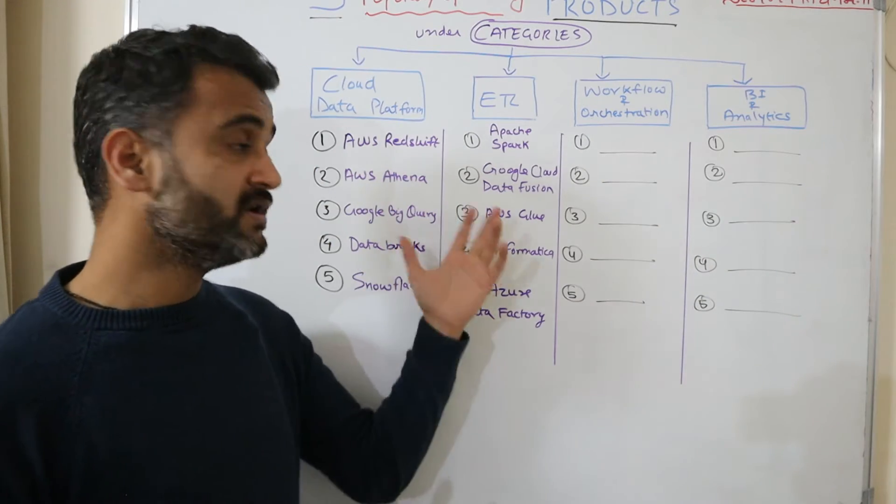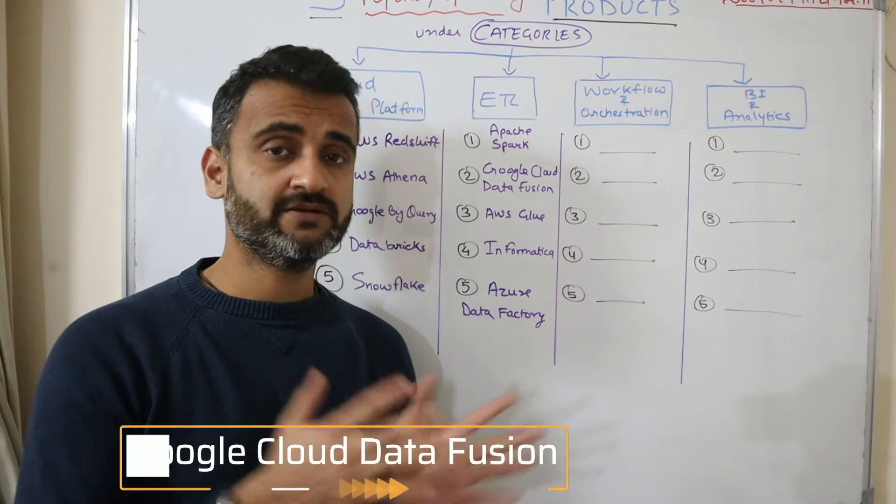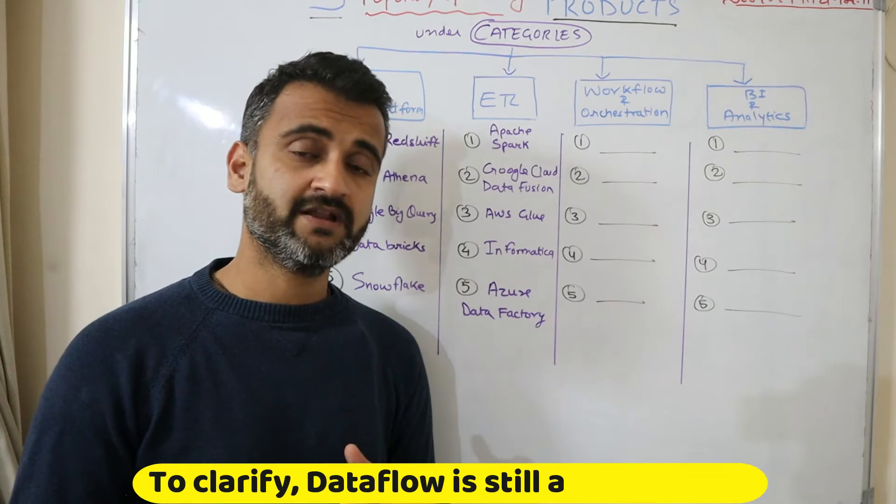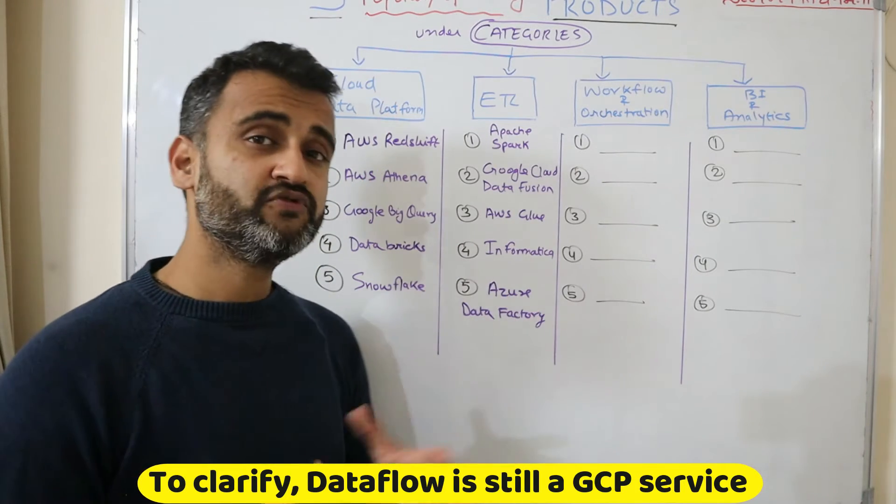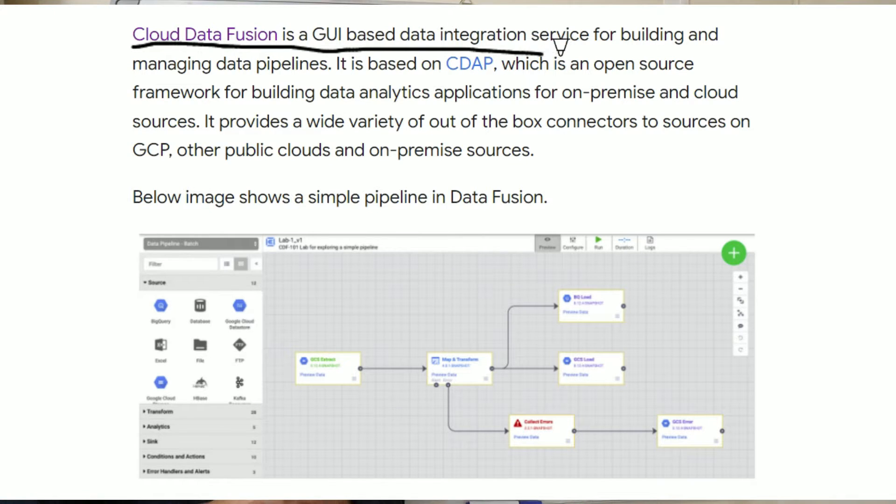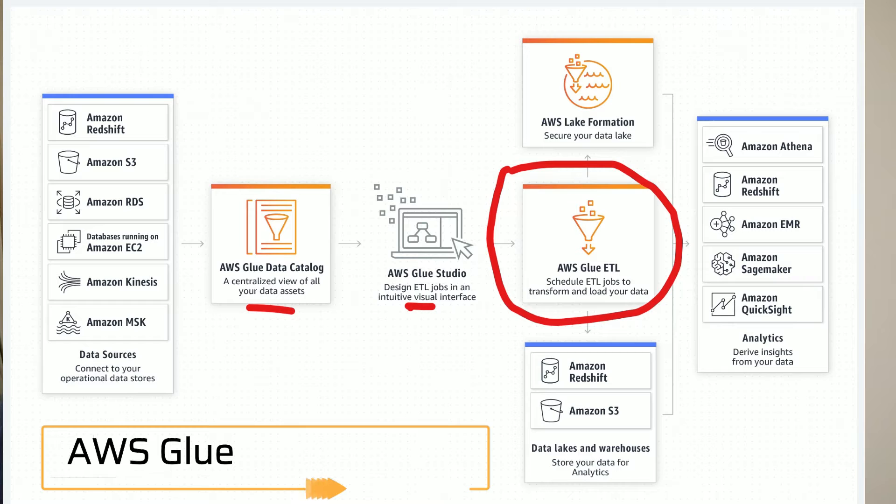However, if you come from a no code background and if you do not have exposure to coding, then there are other products for you which we will discuss now. For example, Google Cloud Data Fusion. It is the latest offering from Google Cloud. Previously Google offered Google Data Flow, but that also required a certain amount of coding. Google Data Fusion is completely serverless offering from Google Cloud where you can drag and drop your data workflows and ETL workflows and Google Cloud will do the magic behind the scenes.